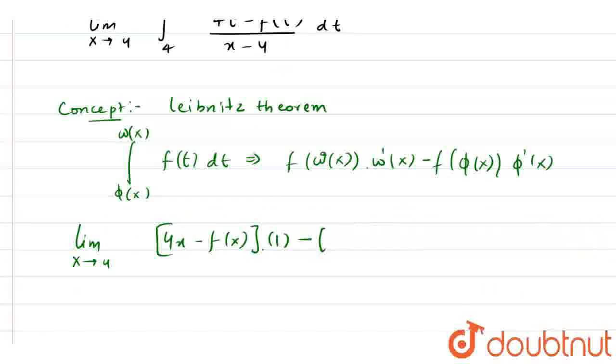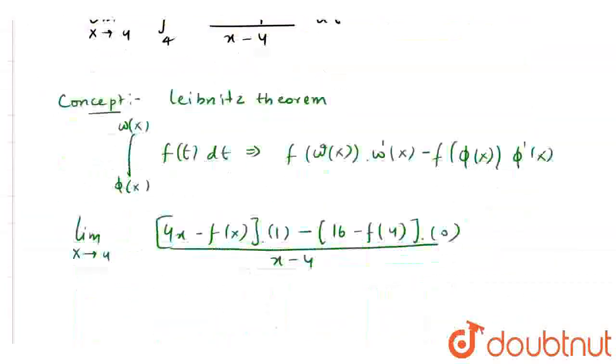Now I am going to put 4 in place of t, then we have 16 minus f(4) multiplied by the derivative of 4, which is 0. And we have x minus 4 in the denominator.